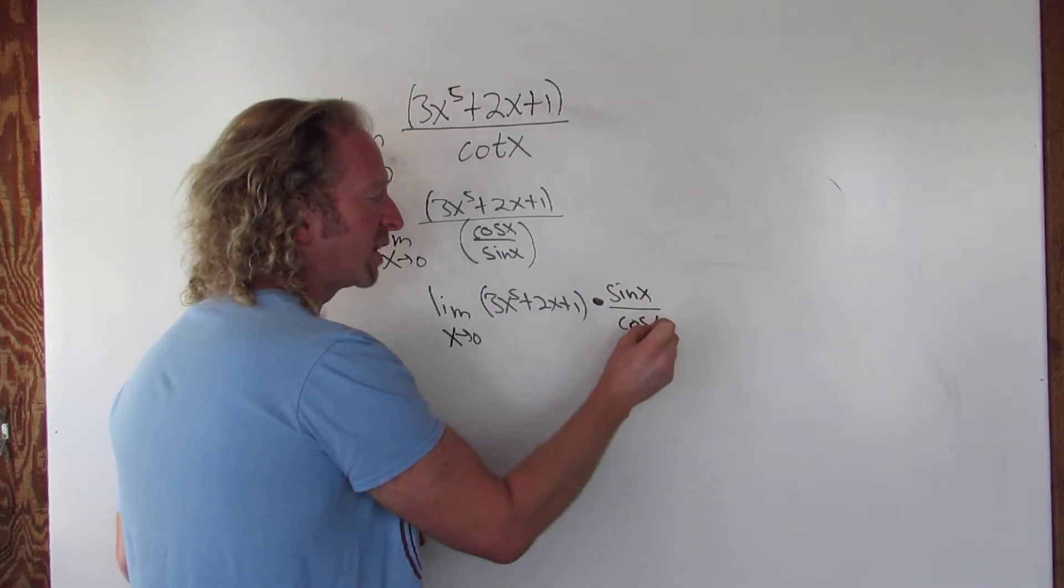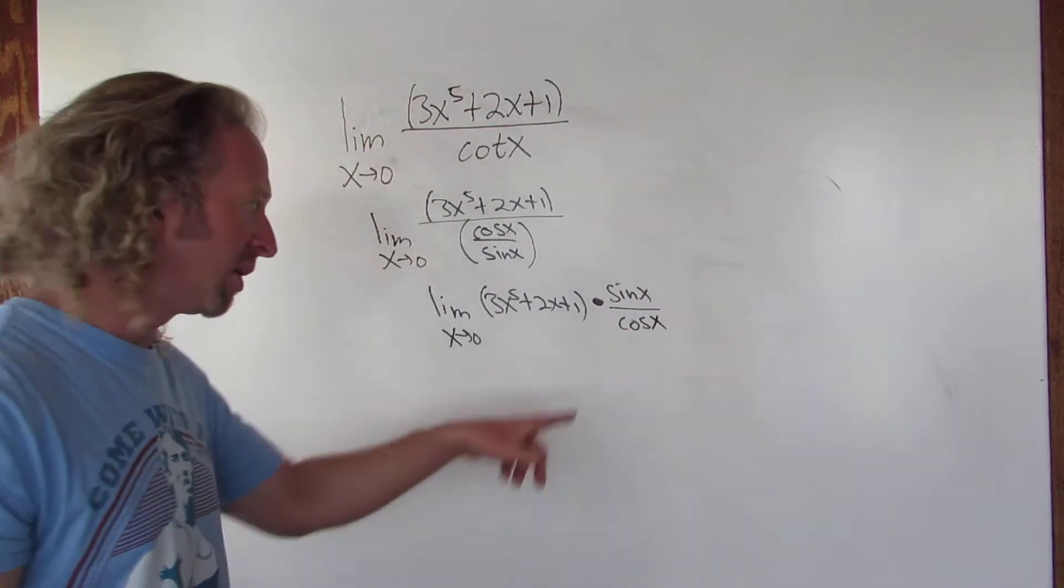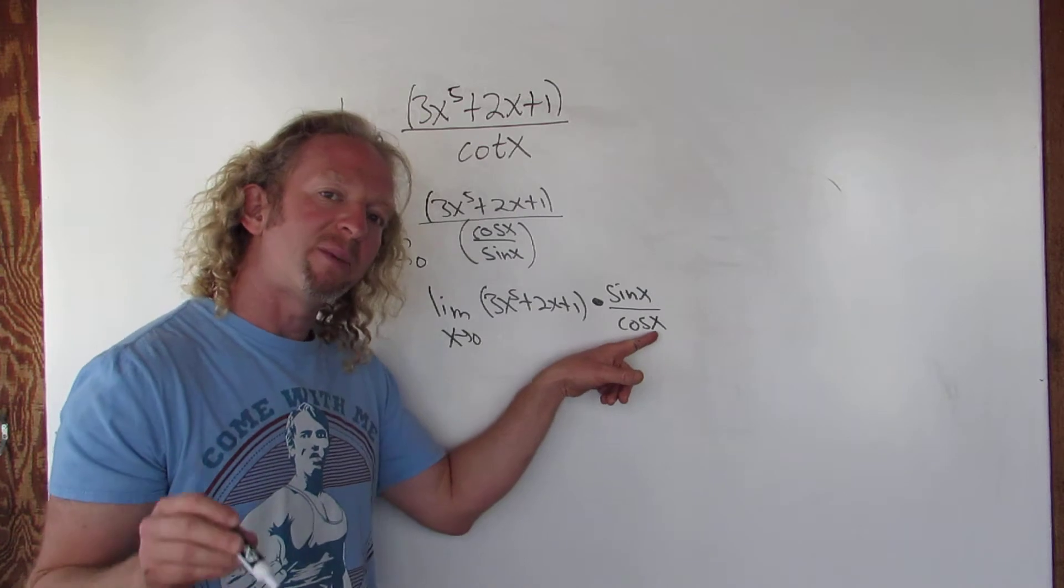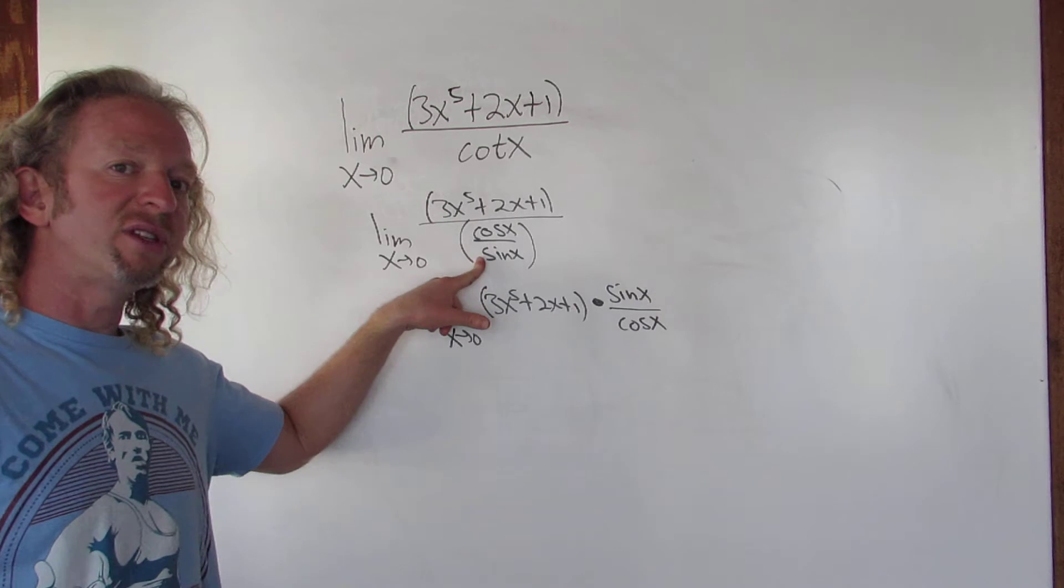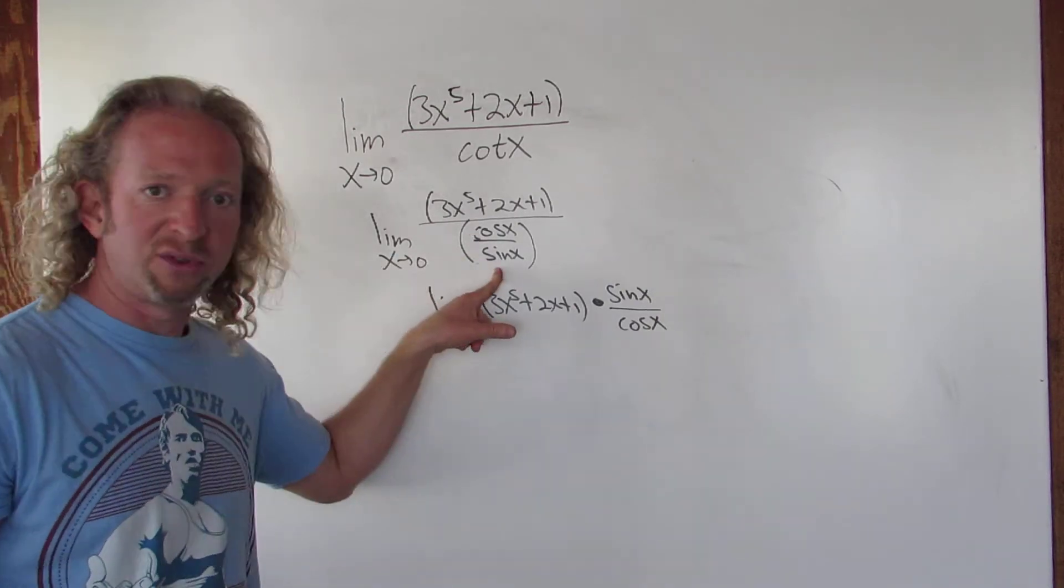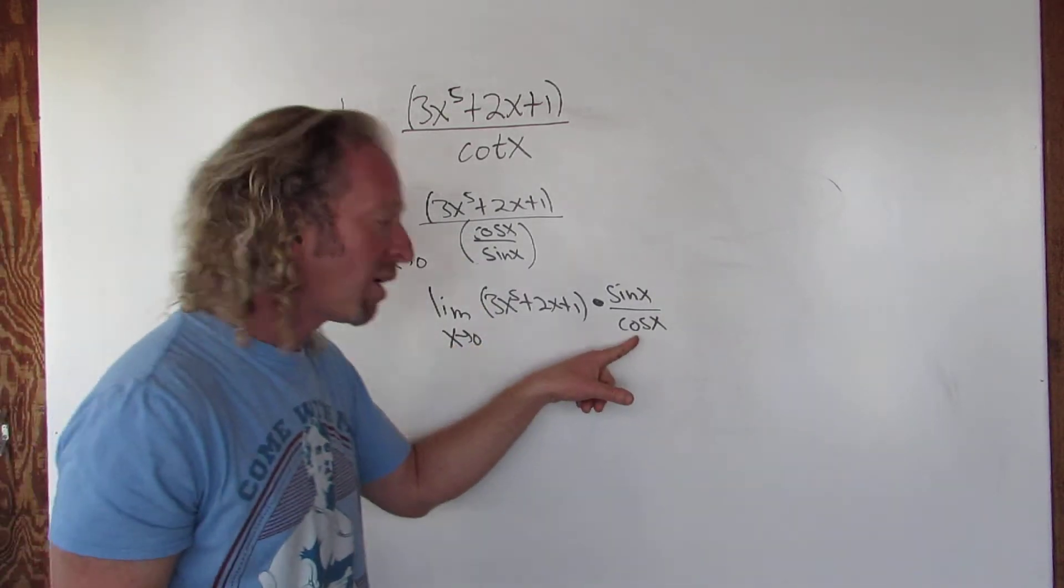And now we're in a position where we can actually plug in 0. Because if you plug in 0 here on the bottom, the cosine of 0 is 1. See, we couldn't do it over here because when you do it here, sine of 0 is 0, so you get a number over 0. You can't have 0 on the bottom. But now we can do it here.